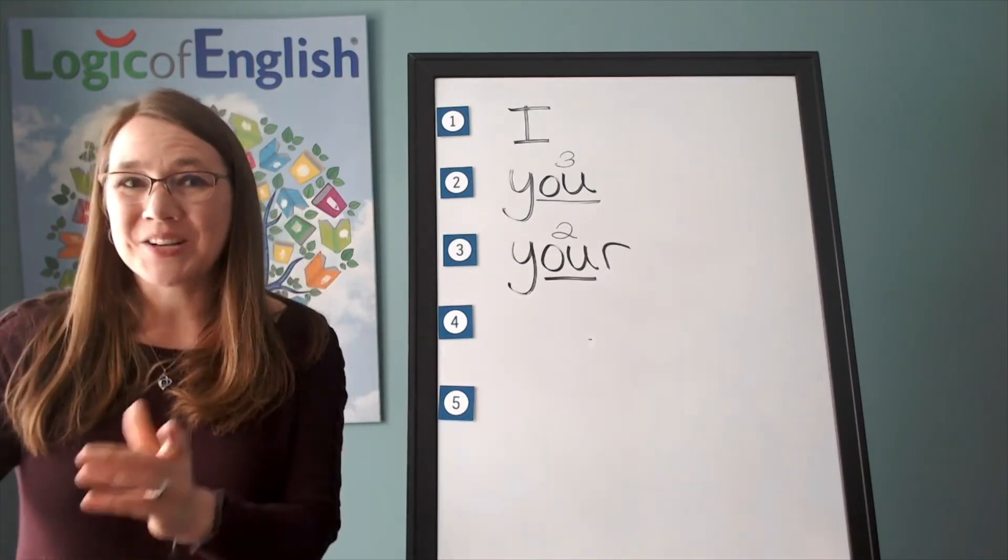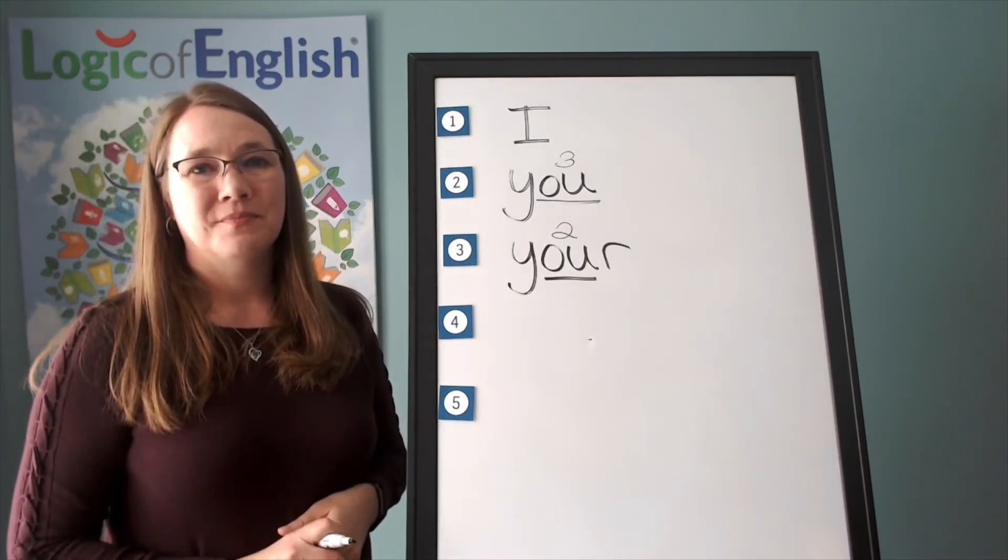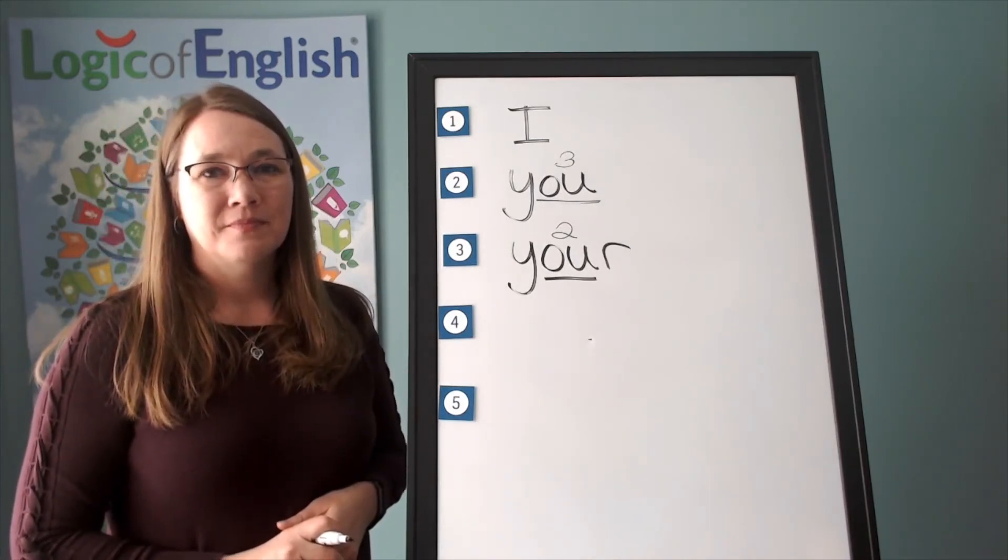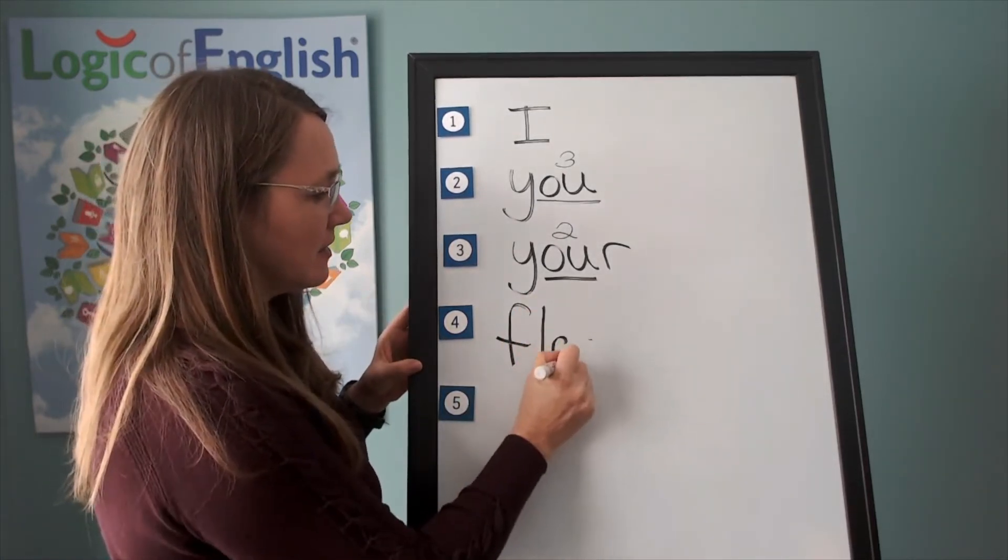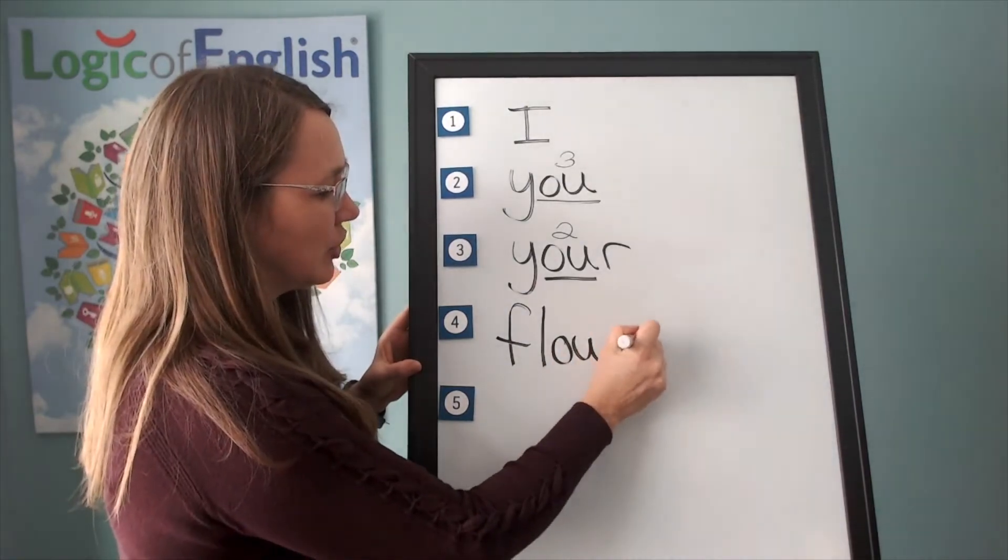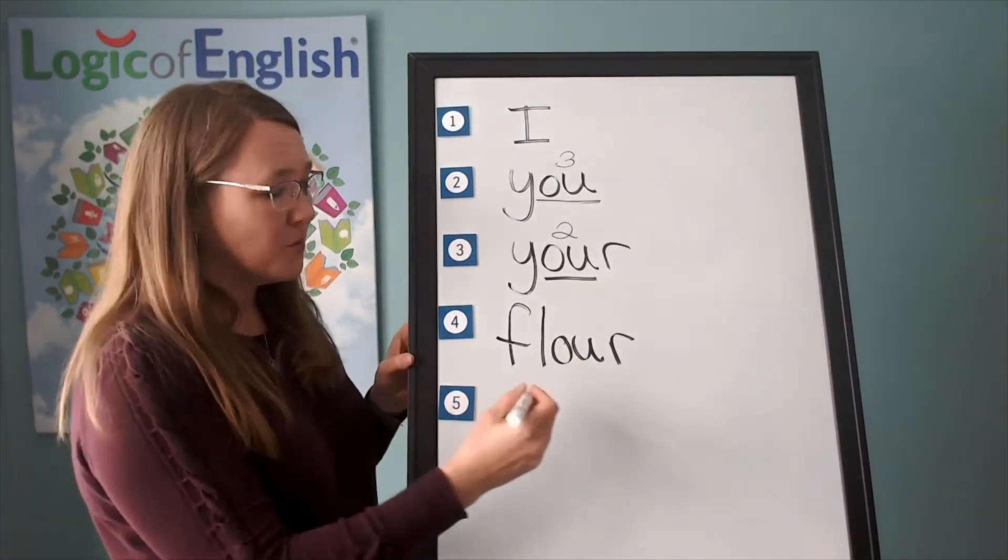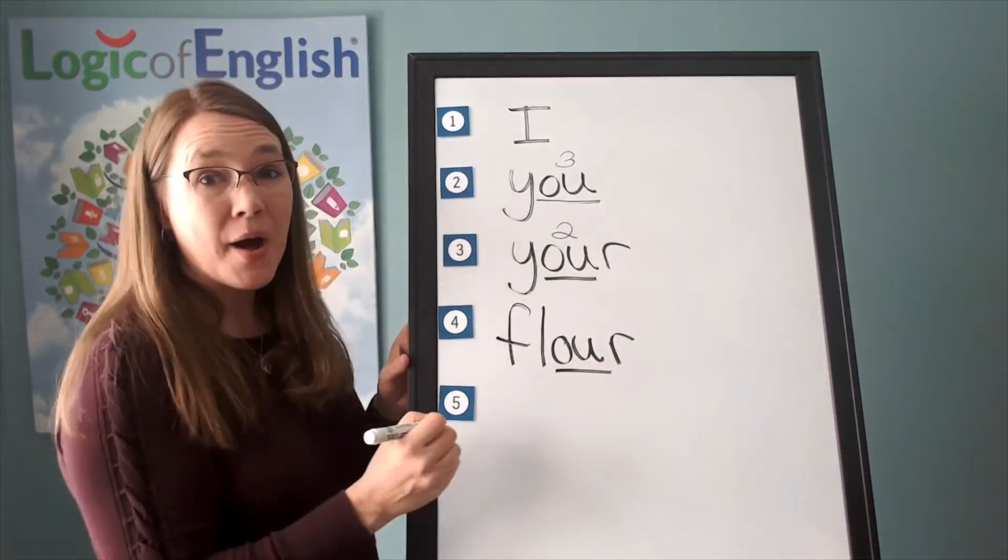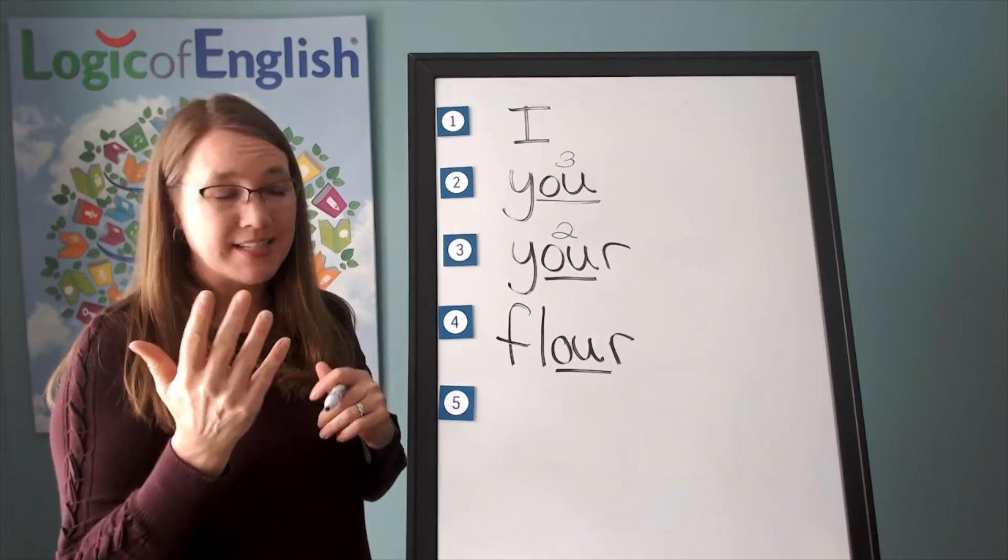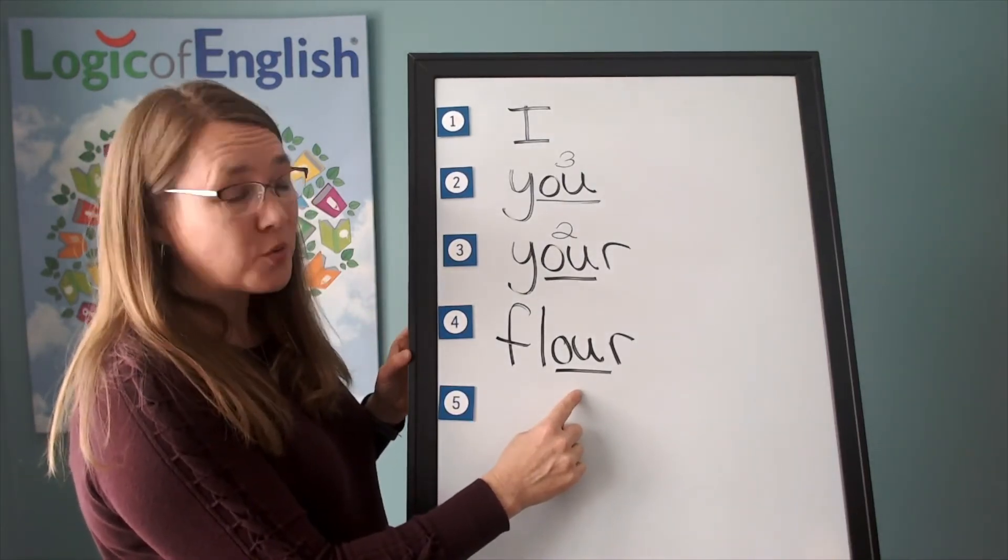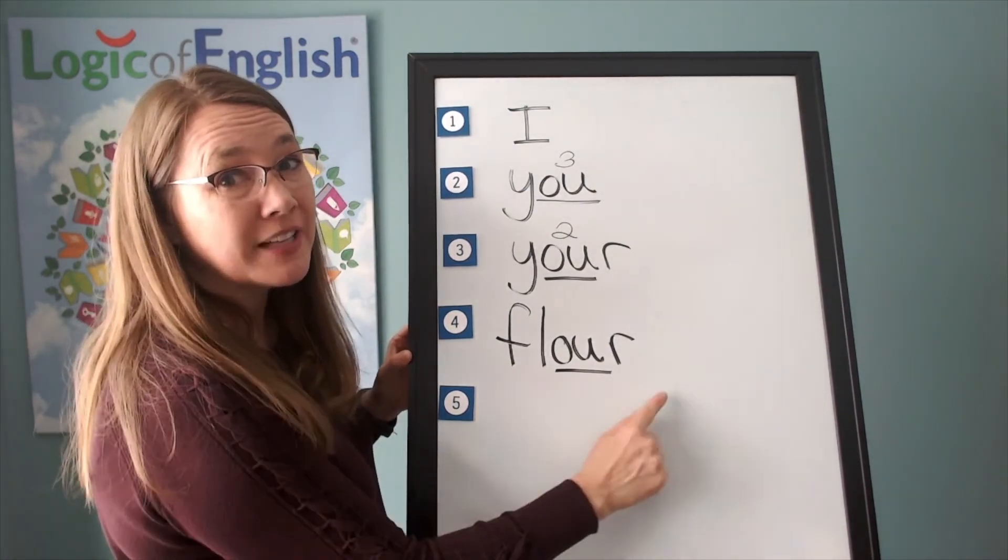Go ahead and write flour. Good job. Now help me to write it. F, l, ow, ur. And how will we mark it? Very good. We'll underline the ow. And what sound of ow, o, oo, oo, uh, uh is this? It's the first one. Ow. Flour. Let's sound it out. F, l, ow, ur. Flour.